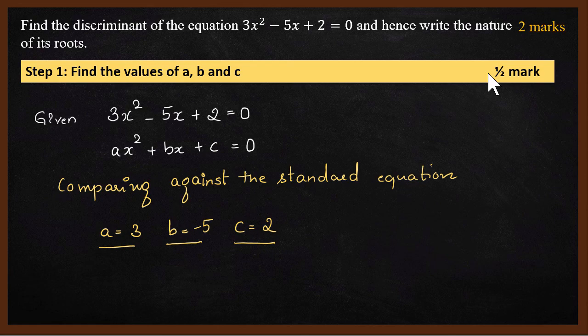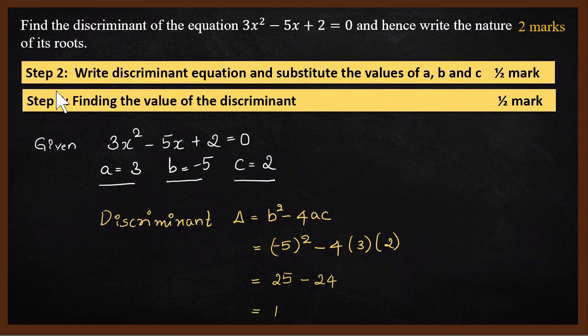The second step and the third step are linked. If you do these two steps, you get one mark. In the second step, we write the discriminant formula. The formula is discriminant equals b² - 4ac. Once you write the formula, we substitute the values for a, b, and c.